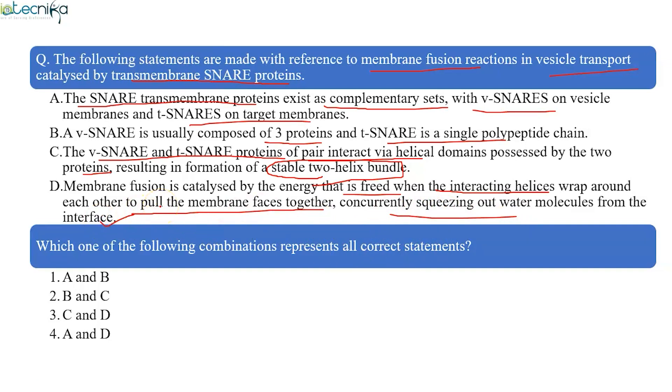In this question, you need to find out the correct combination of statements. The correct answer is statement A and D. A and D are correct, that means statement B and C are incorrect. Let's check out why these two statements are incorrect.